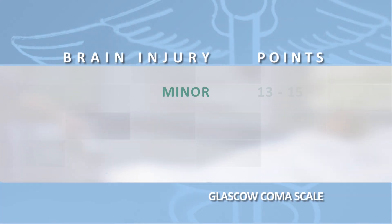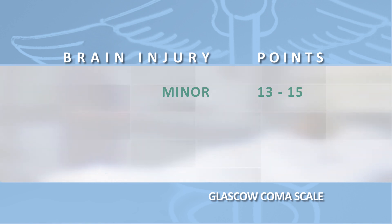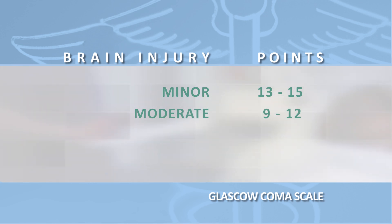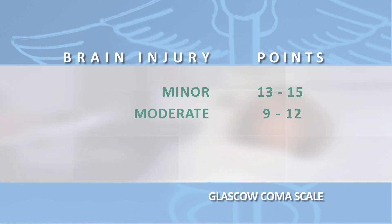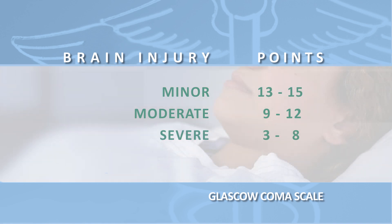A GCS with a total score from 13 to 15 indicates a minor brain injury. A GCS with a total score from 9 to 12 indicates a moderate brain injury. A GCS with a total score from 3 to 8 indicates a severe brain injury.